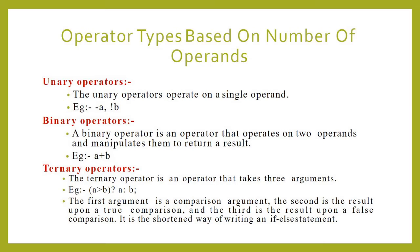Unary operators operate on a single operand. Examples include: minus a, plus a, not b, etc. Here you can see one operator and a single operand present in the operation.